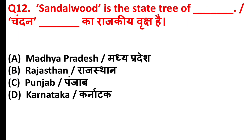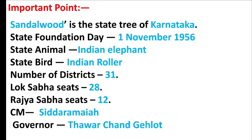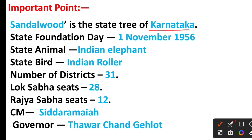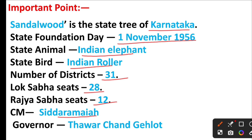Sandalwood is the state tree of which state? The right answer is option D: Karnataka. Friends, sandalwood is the state tree of Karnataka. State foundation day is 1 November 1956. State animal is the Indian elephant. State bird is the Indian roller. Number of districts is 31. Lok Sabha seats are 28, Rajya Sabha seats are 12. Present CM is Siddaramaiah and present governor is Thaawarchand Gehlot.